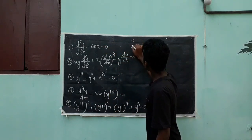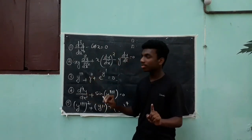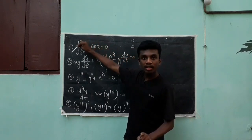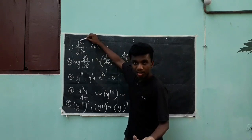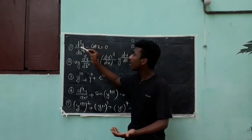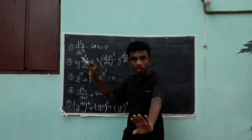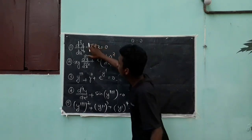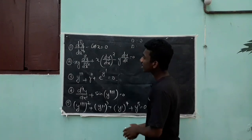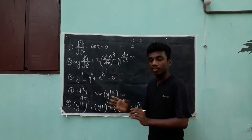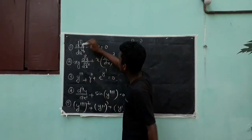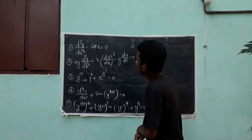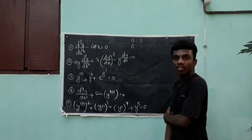To find order and degree: first, identify all derivative terms. The highest order derivative gives the order. For degree, check the power of that highest order derivative term — but only if it is not inside a transcendental function. For example, the equation xy·(d²y/dx²) + x·(dy/dx)² - y·(dy/dx) = 0: identify all derivative terms. The highest order term is d²y/dx², which is order 2. So the order is 2.